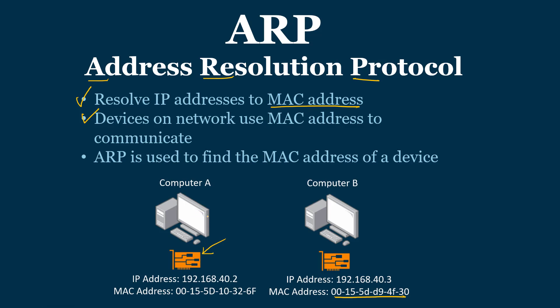This network interface card is assigned a unique number called the MAC address. So whether it's a computer, a laptop, your phone, your Xbox, or your PlayStation, it's going to have a network interface card with a unique MAC address. That's how computers or devices on a network talk to each other — computer A sends to computer B's MAC address, and computer B responds to computer A's MAC address.